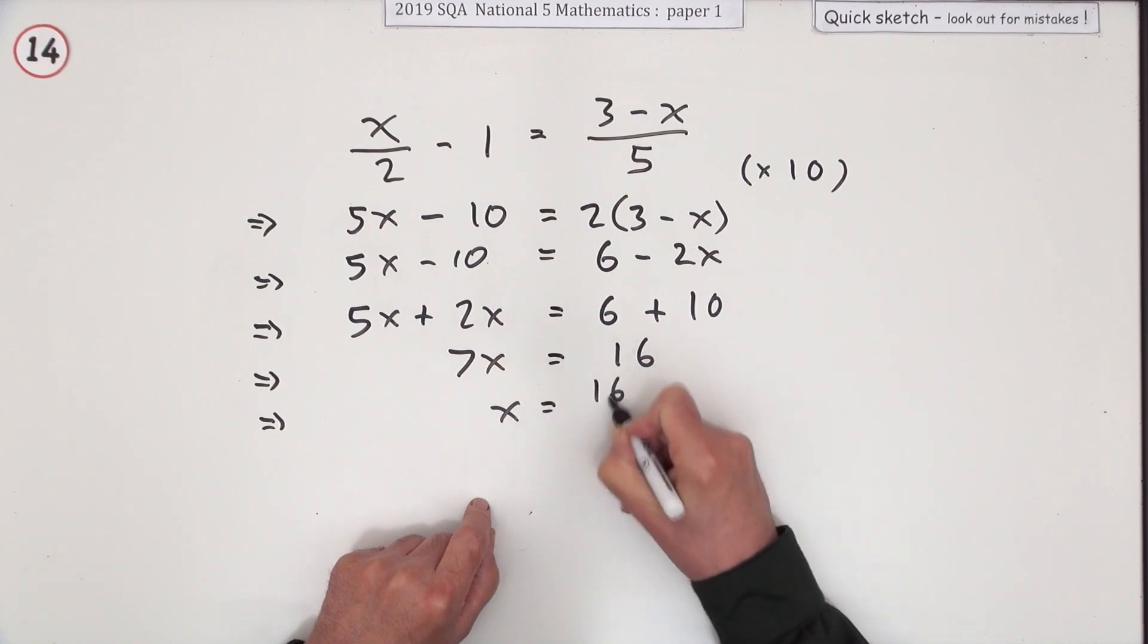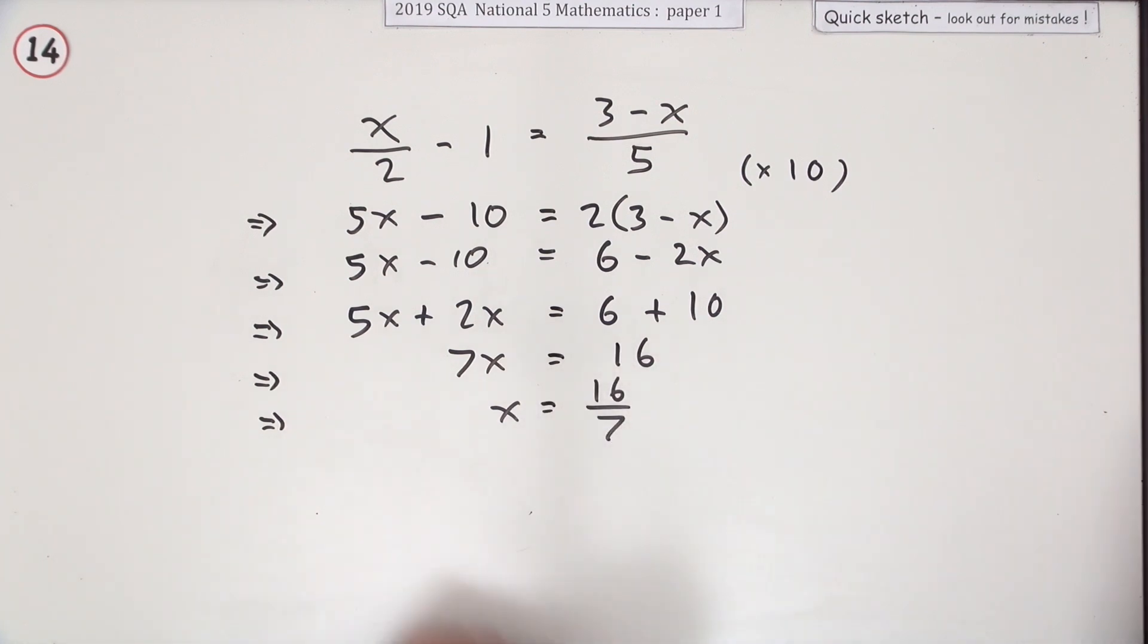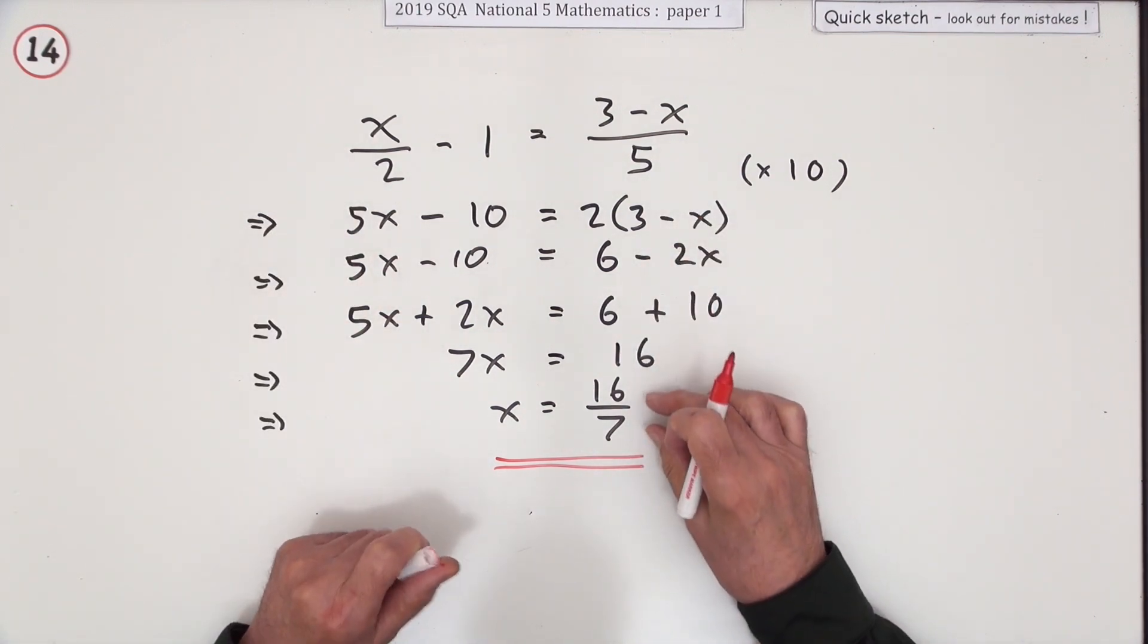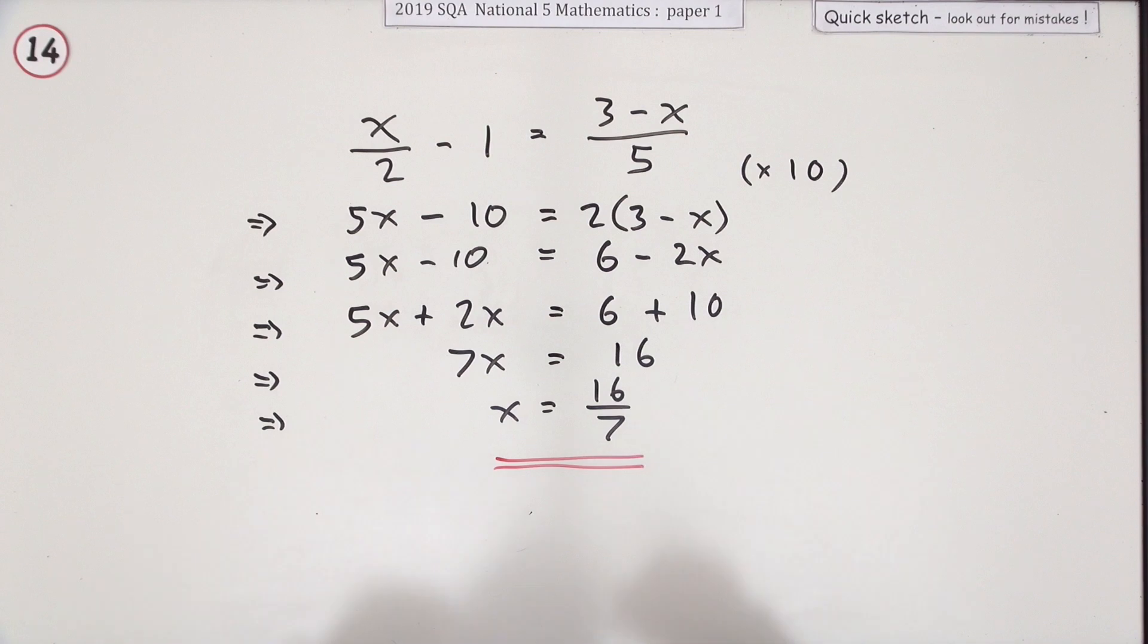So x is 16 upon 7. I suppose that's a bit of a disappointment - it makes you go back through that and check it a few times because you'd like that to be a nice wee number, wouldn't you? But that's what it is.